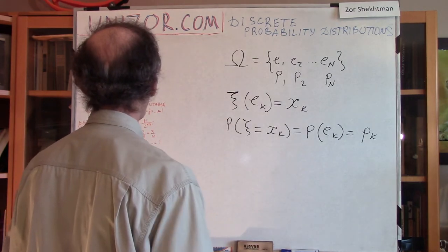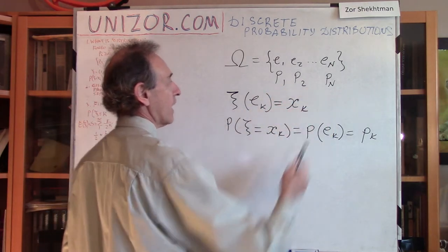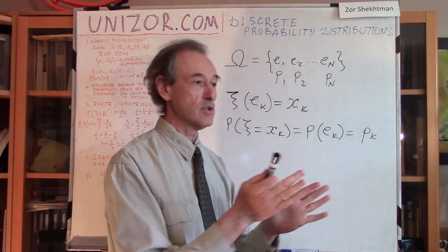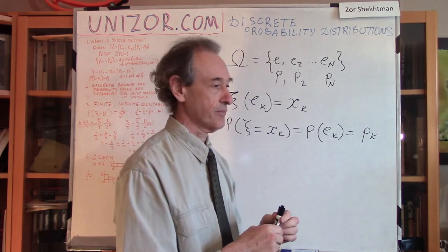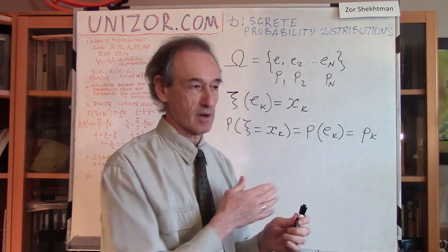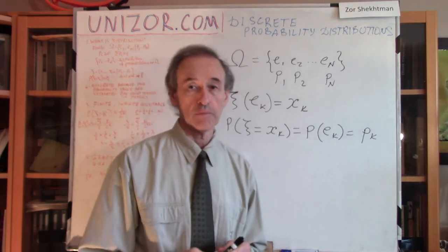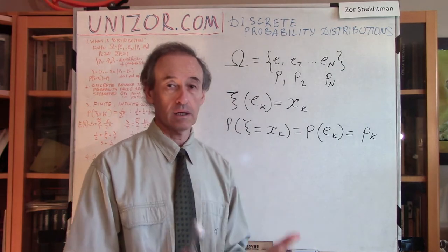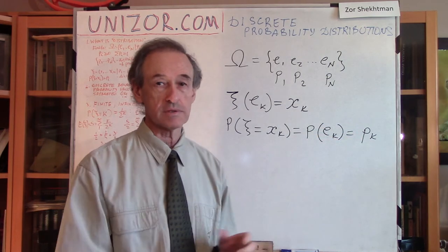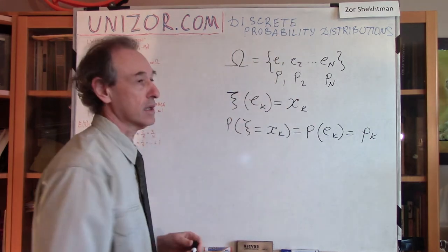Now, why do we call it a discrete distribution? Because these values are separated from each other. It's not like all the real numbers, where there is no separation between two consecutive values. In the case of a finite number of values, there is always some distance between them — they are separated from each other, and that's why we call them discrete.